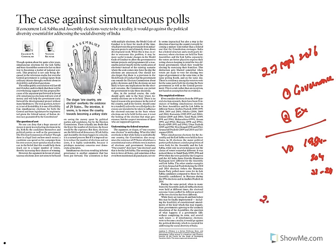Regarding constitutional feasibility, a no-confidence motion can overthrow the government at the centre or the states. We have federalism where the constitution gives powers to both states and the union simultaneously. If any government is overthrown due to a no-confidence motion, the simultaneous elections agenda will be thrown away. Constitutional feasibility will only be available if a constructive motion of no-confidence exists — meaning no-confidence motion cannot be passed by the opposition without proposing an alternative.